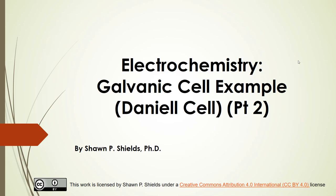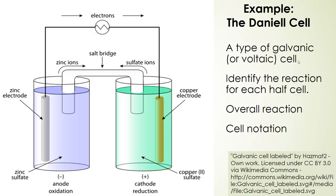This is the second lecture in electrochemistry. We're going to talk about a galvanic cell example, in particular the Daniell cell. Let's take a look at the basic setup for the Daniell cell. Remember, this is a type of galvanic cell, also called a voltaic cell.